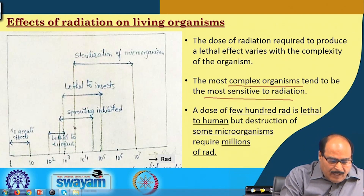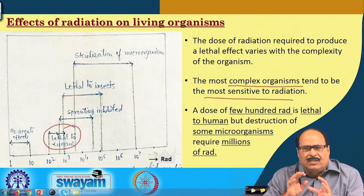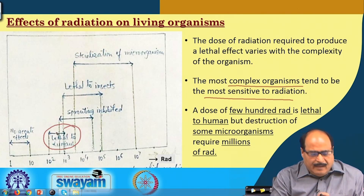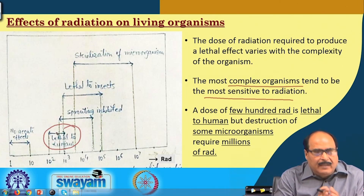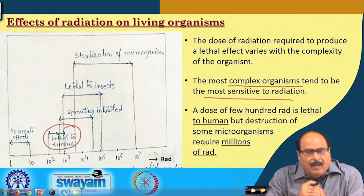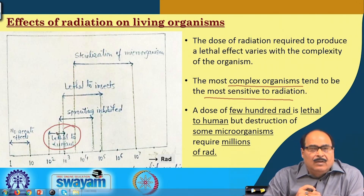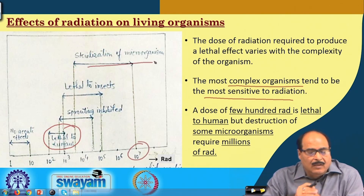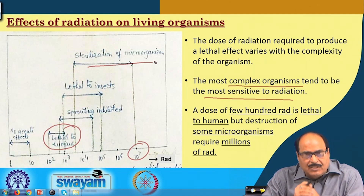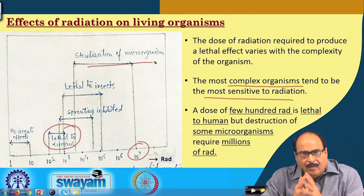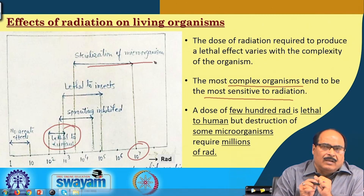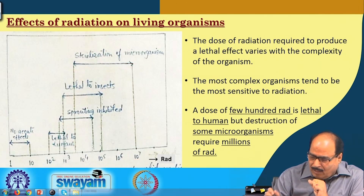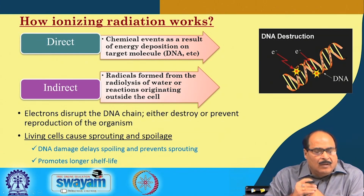Human beings, considered the most complex biological systems, can be killed by exposure to only a few hundreds of rads. In contrast, sterilization of single-cell microorganisms requires millions of rads — to the power of several million. So, the more complex the biological system, the more sensitive it is to ionizing radiations.